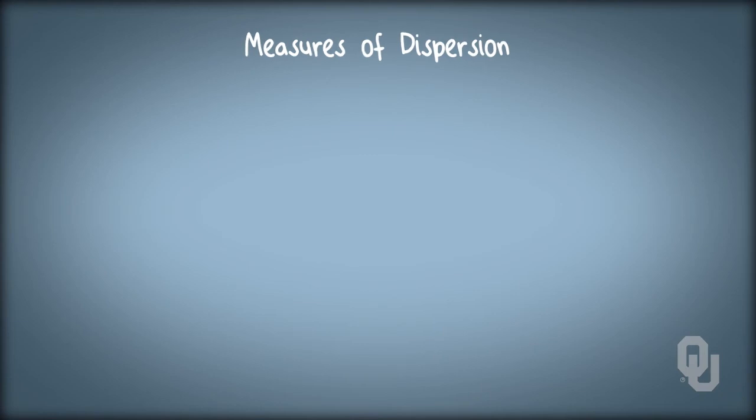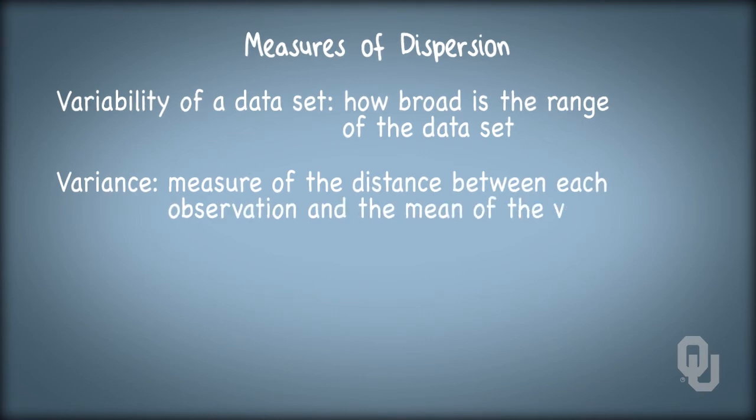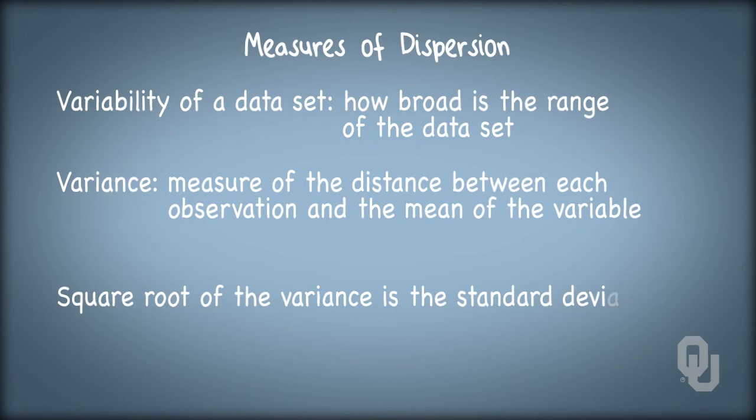Measures of dispersion give us a better idea of the variability of a dataset, or how broad is the range of that dataset. The most common measure of dispersion is the variance, or a measure of the distance between each observation and the mean of the variable. The square root of variance is the standard deviation, which is measured in the units of the variable itself.